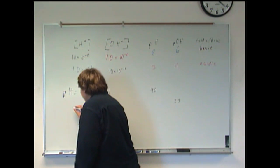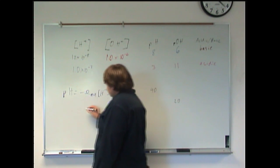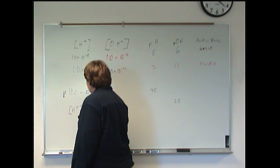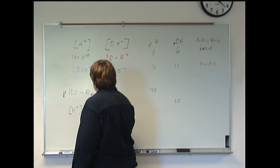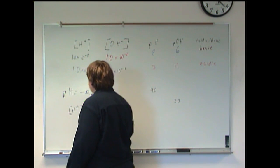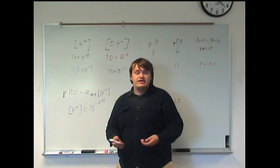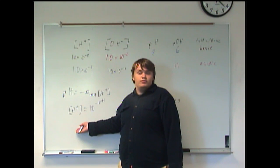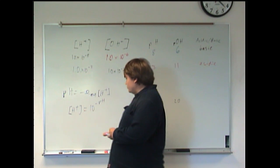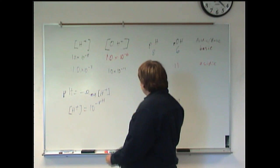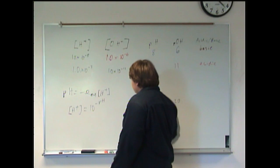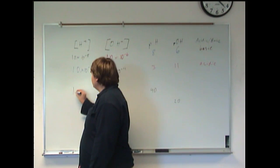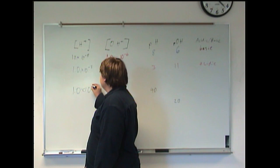So, to do that, it basically boils down to this. H plus equals 10 to the negative pH power. I'll let you verify that on your own time, but for now, just trust me that this formula works. So, using this, we get a concentration of 1.0 times 10 to the negative 4.